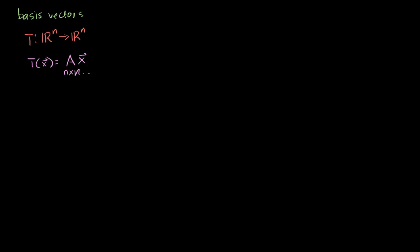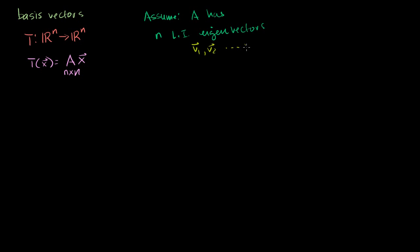Let's say that we have n linearly independent eigenvectors of A — and this isn't always going to be the case, but it can often be the case. Let's assume that A has n linearly independent eigenvectors. I'm going to call them V1, V2, all the way through Vn. Now, n linearly independent vectors in Rn can definitely be a basis for Rn, and I want to show you in this video that this makes a particularly good basis for this transformation.